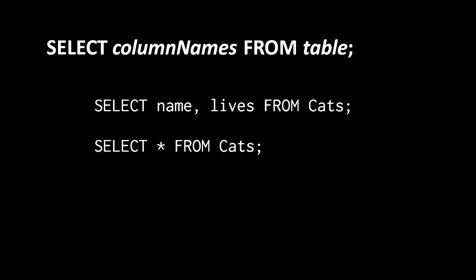To perform a query we use the select statement, which in its simplest form is written: select, then one or more column names separated by commas, the reserved word from, and then the name of the table. For example, selecting the columns name and lives from the table cats returns a table with those two columns and all rows of cats. In the second example, we use the asterisk symbol instead of column names — a shortcut meaning all columns — so select asterisk from cats returns the entire cats table with all columns.